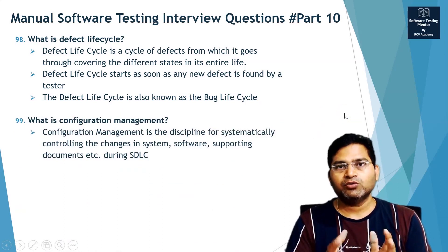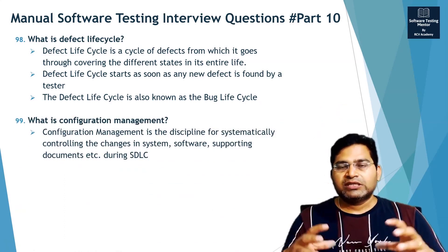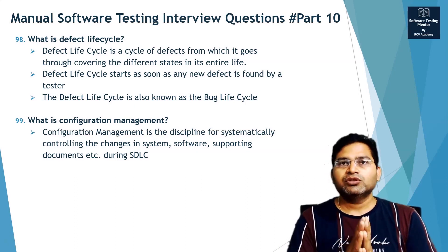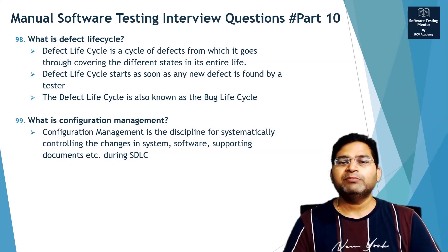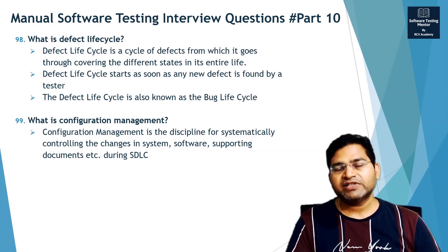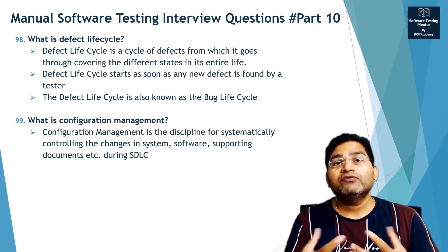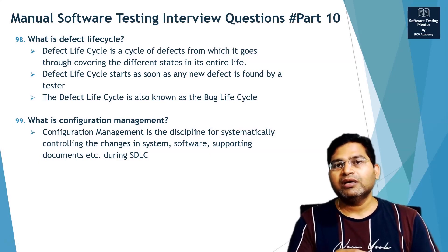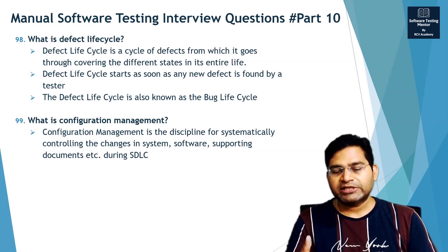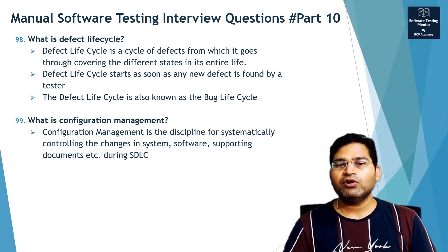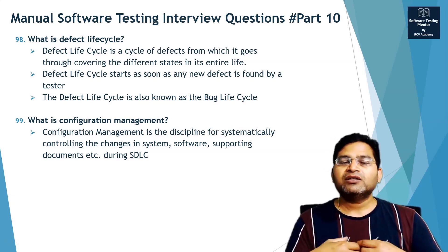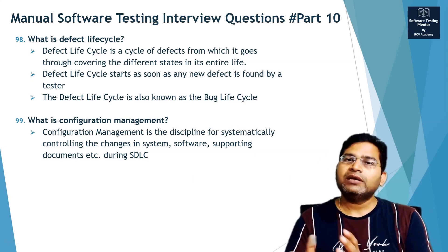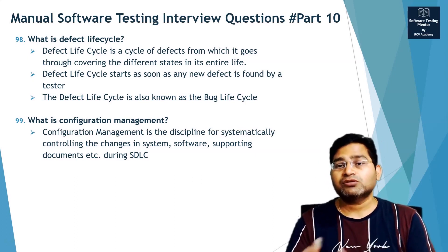Configuration management is an umbrella term — it's a discipline for systematically controlling changes in the system, software, supporting documents, and many other things during the software development lifecycle. When we say system, there are system configurations; when we say software, you need to maintain different versions. You can't just work on a plain text file and release the software. For all of that, you use tools that provide configuration management capability.